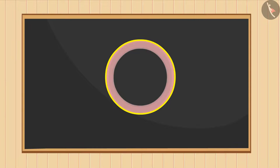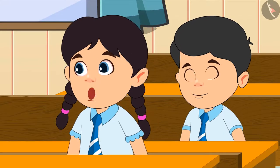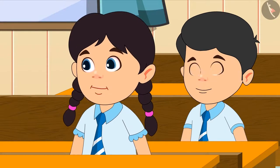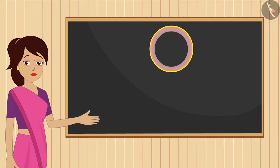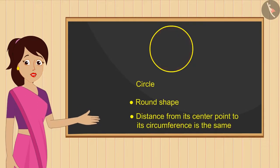This is a circle. Absolutely right. A circle is a round shape in which the distance from its center point to its circumference is the same.